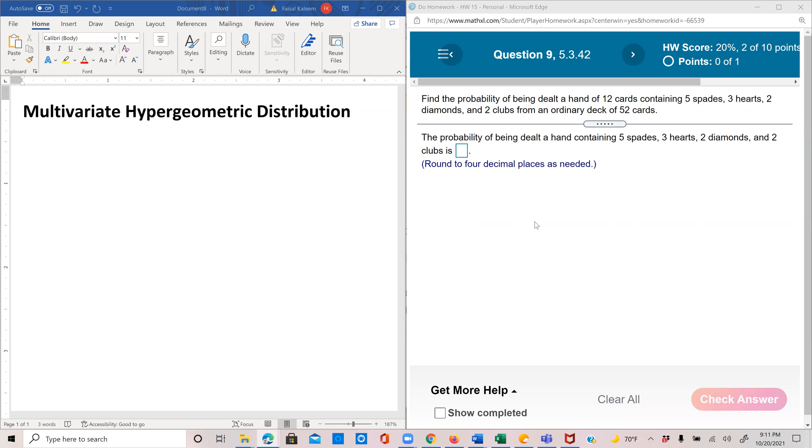So suppose if there are N total items of which A items are of type 1, B items are of type 2, C items are of type 3, and so on.